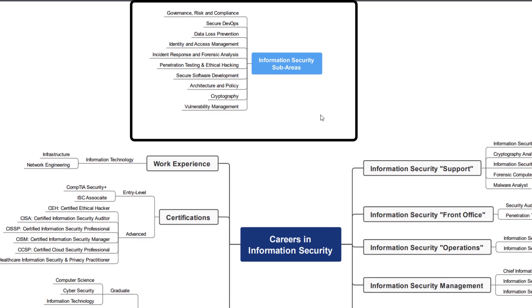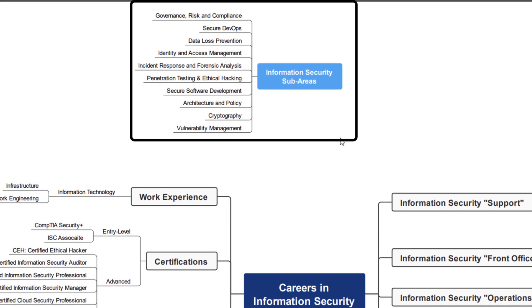Up here I have the information security sub-areas. Information security is actually a really large field and can be broken down into several sub-areas. What I have listed here is: governance, risk and compliance, secure DevOps, data loss prevention, identity and access management, incident response and forensic analysis, penetration testing and ethical hacking, secure software development, architecture and policy, cryptography, and vulnerability management. These are the areas where you should take a look and see what interests you most, because each of these areas almost turns into its own full-time track.